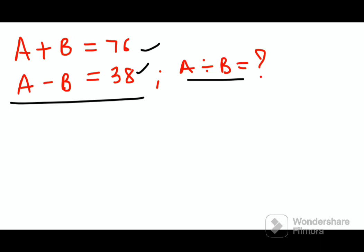Now please understand you can do this simultaneously. You add the two equations, so this gets cancelled. You have 2A equals 114. So A, dividing both sides by 2, you get 57.